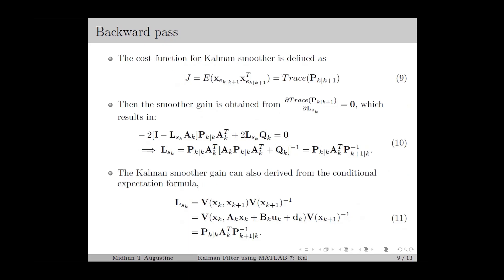In the Kalman Smoother, we define the cost function J as E[x̃k|k+1 · x̃k|k+1^T], which equals the trace of Pk|k+1. From the first-order condition for optimality, the gradient of trace(Pk|k+1) with respect to Lsk must be 0, giving Lsk as in equation 10. The smoother gain can also be obtained from the conditional expectation formula, giving Lsk = Cov(xk, xk+1) · Var(xk+1)^{-1}. Since xk and dk are independent, this simplifies to Lsk = Pk|k · Ak^T · Pk+1|k^{-1}.